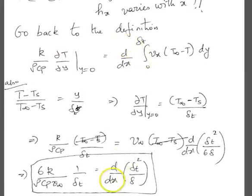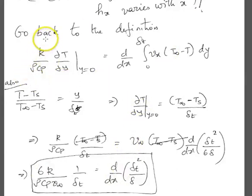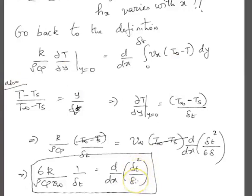The more general case is when the Prandtl number is not equal to 1. Go through the derivations in this PDF. This relationship still holds good. When delta-T is not equal to delta, it is a little bit more complicated, but it can still be solved. By using a change of variables — which I have done in the following pages, and we did this in class as well — you can solve it.